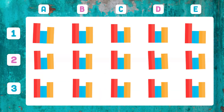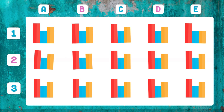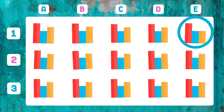Which drawing is different from the rest? The different one is 1E, which is the shortest yellow bar.